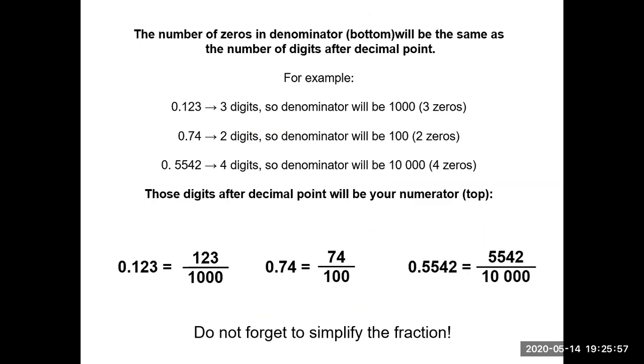The number of zeros in the denominator will be the same as the number of digits after the decimal point. For example, 0.123 - three digits, so denominator will be one thousand, three zeros. 0.74 - two digits, so denominator will be 100, two zeros. 0.5542 - four digits, the denominator will be ten thousand, four zeros. Those digits after decimal points will be your numerator at the top. So 0.123 becomes 123 over one thousand. 0.74 will be 74 out of 100. 0.5542 will be 5,542 out of ten thousand.